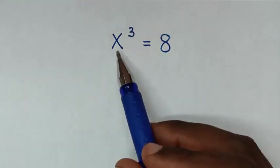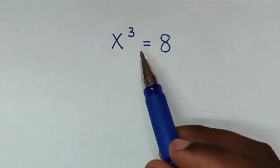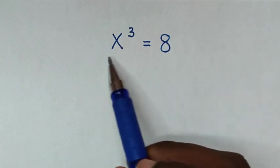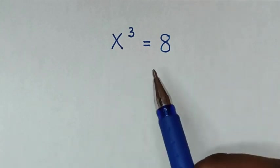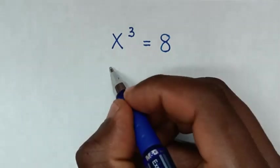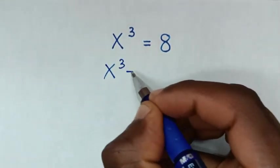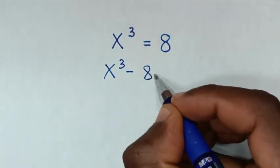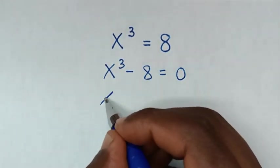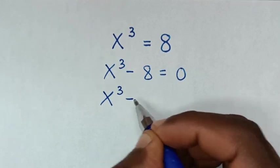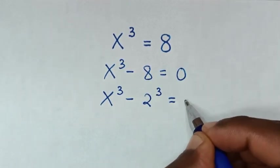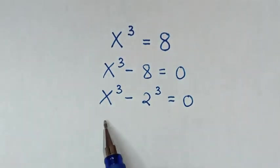Hello. How to solve x³ = 8 — to find all the values of x from this equation. First we'll take this 8 to the left side, so our equation will be x³ - 8 = 0. Then x³ - 8 is the same as x³ - 2³ = 0.